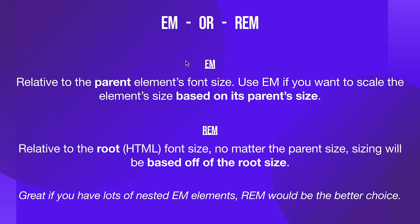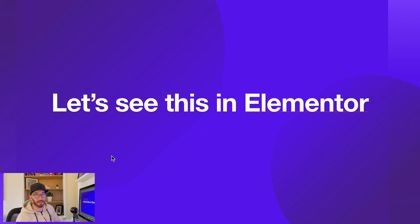So when do you choose ems or rems? Because they are pretty similar. Essentially, because ems are relative to the parent element's font size, you'd use them if you want to scale an element based on the parent. However rems are relative to the root, so no matter the sizing of the parent, sizing will be based off the root size. Basically within your Document Object Model, or DOM, if you have lots of nested ems you might want to use a rem to bypass all of that and reset to your root font. That's the end of the presentation — I'm going to flip over to Elementor to show you what this looks like in real life.